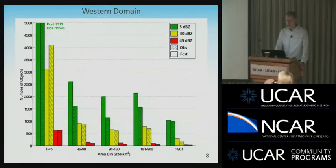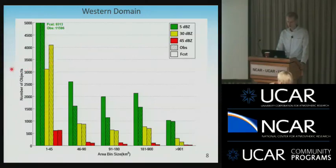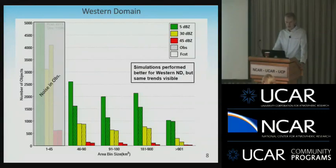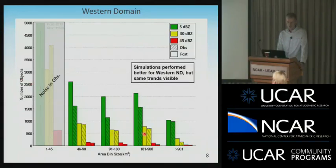In the western domain, basically the same thing is true except for the first bin, where you see a lot of 1 to 45 km objects that are actually noise from the C-band radar — it sometimes had ducting issues and hit the ground. Other than that, the simulations performed similarly, generally over-forecasting all objects across all sizes and intensities, but they did perform better especially for 30 dBZ.